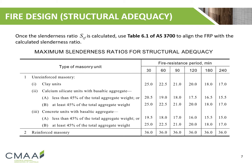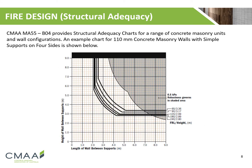Once we've determined our slenderness ratio from the formulas provided in the previous slide, we can use Table 6.1 of AS 3700 to align the fire resistance period with the calculated slenderness ratio. CMAA Manual MA55 Section B04 provides structural adequacy design charts for a range of concrete masonry unit and wall configurations. You may use these to empirically determine the fire resistance period for structural adequacy in lieu of the mechanistic processes shown beforehand.